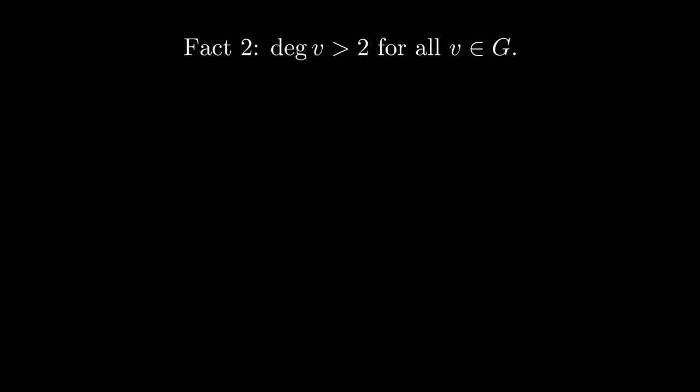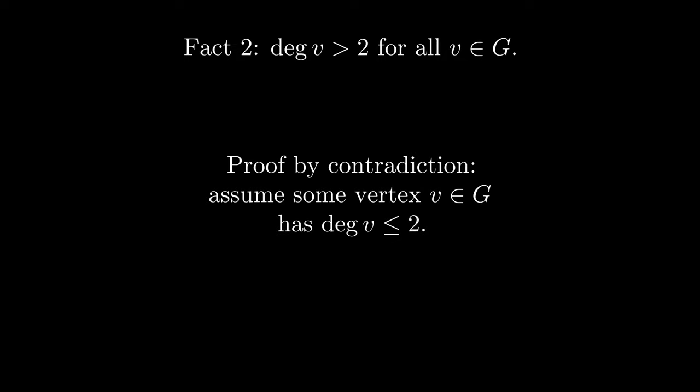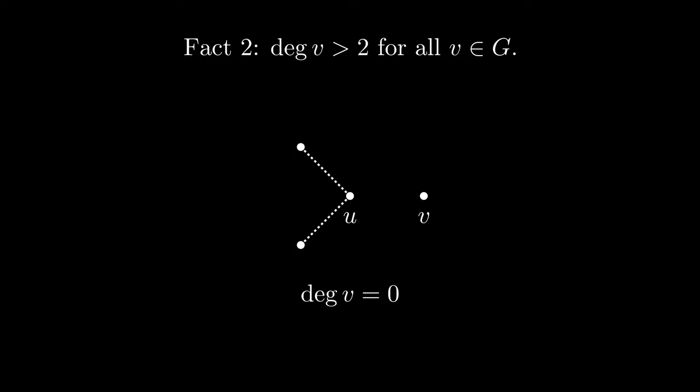The second fact we can observe about G is that all of its vertices have degree greater than two. We can prove this by assuming for the sake of contradiction that the degree of some v is less than or equal to two. We know that v can't have degree zero, since that would make G disconnected. We also know that v can't have degree one, since then u would be a cut vertex. If v has degree two, then let u and w be the vertices adjacent to v.